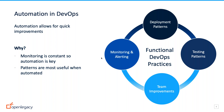What organizations found themselves moving toward is a model where they have processes that support that kind of speed. That basically meant two things: moving away from waterfall development patterns into an agile mode of working, and using more and more automation. These two things go hand in hand because automation is basically one of the key concepts of DevOps.